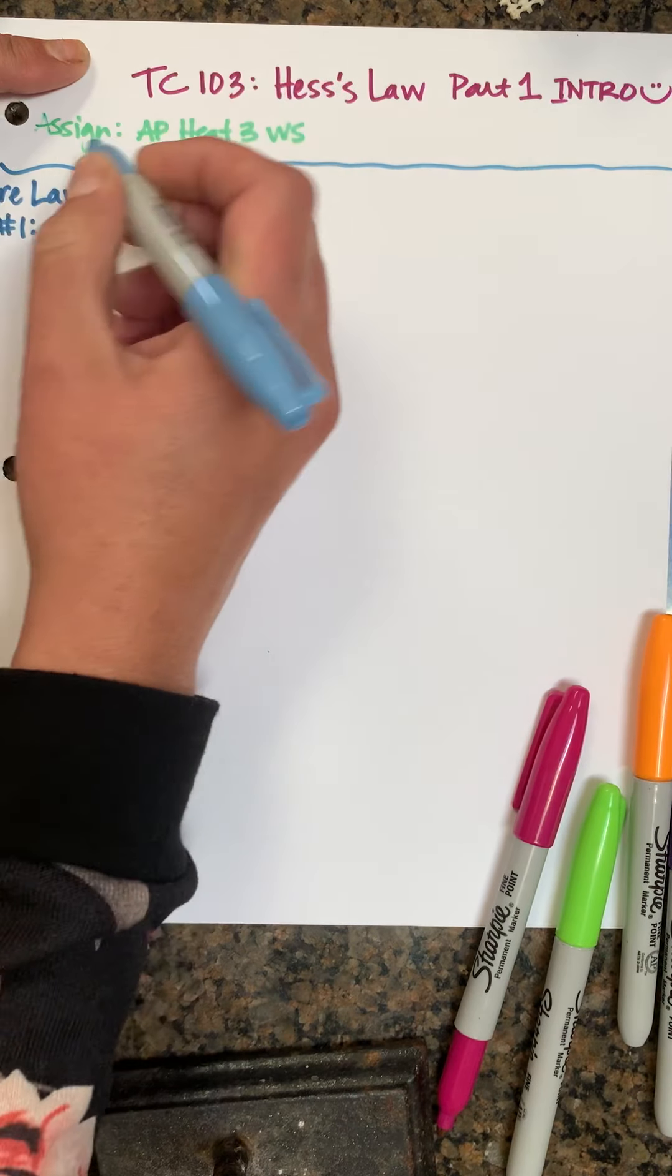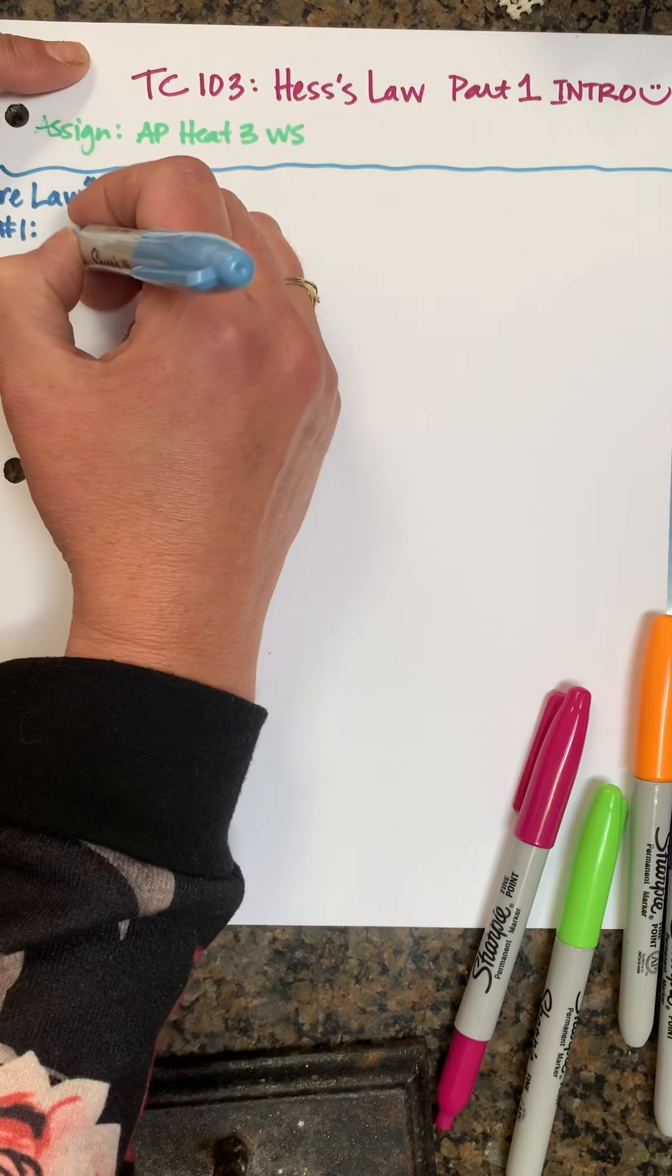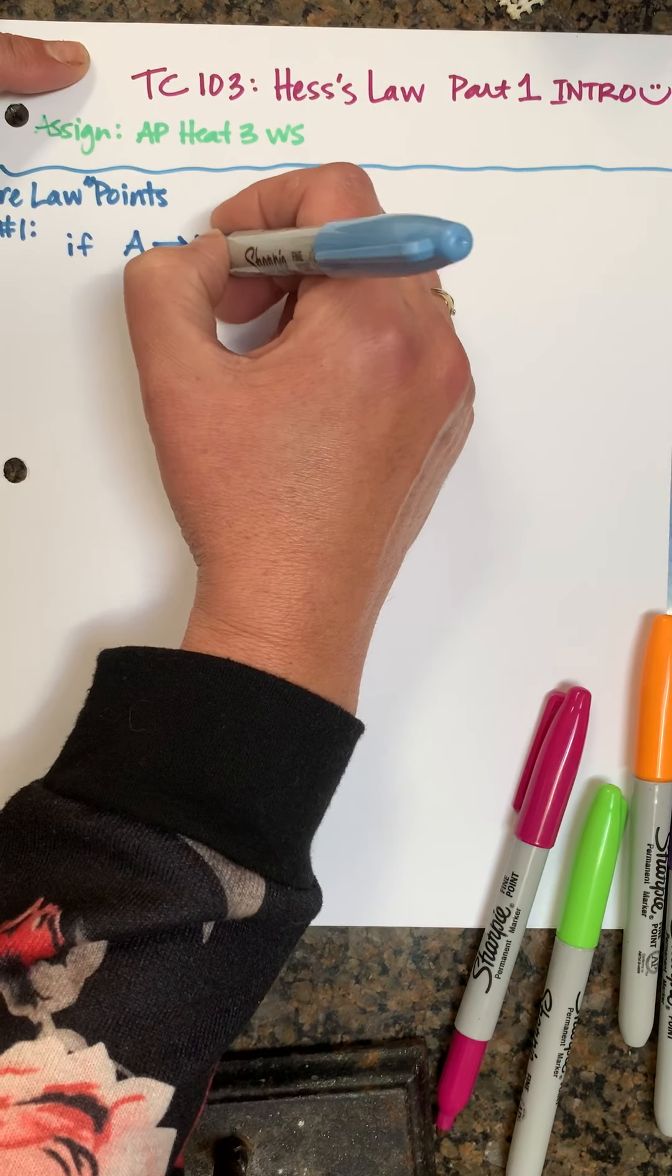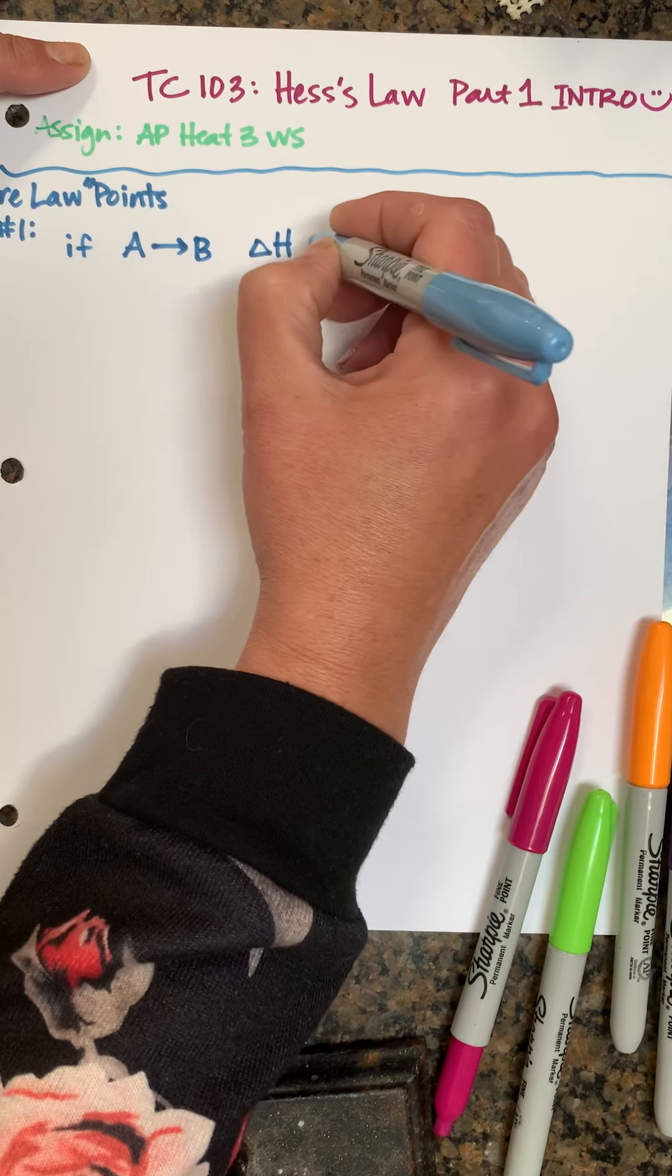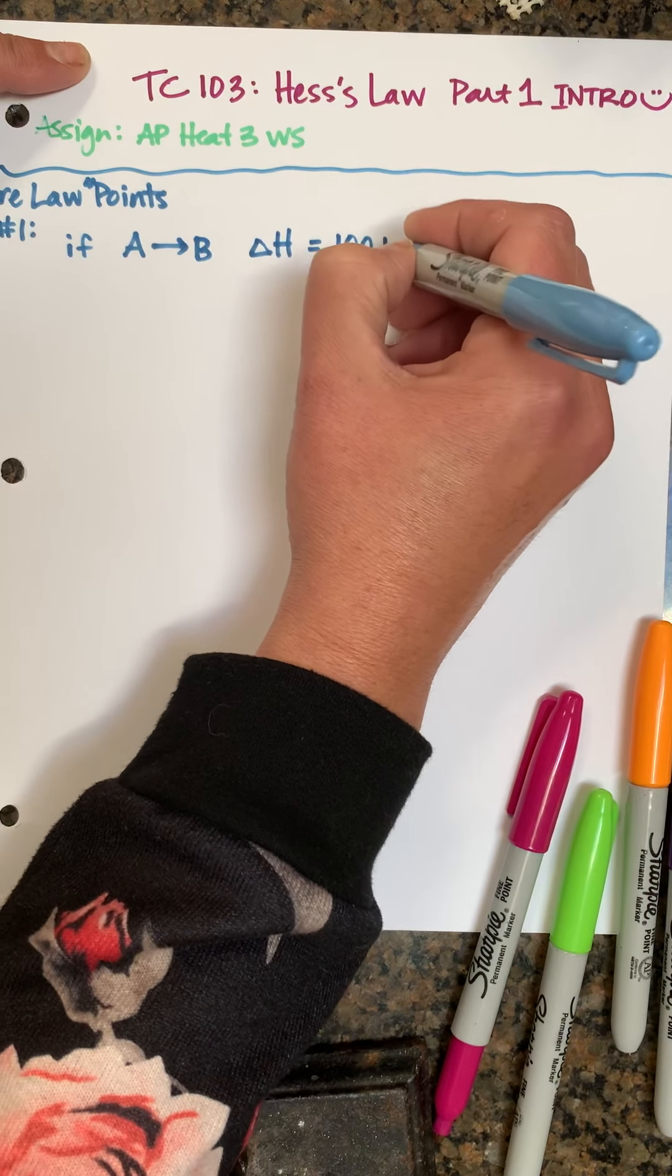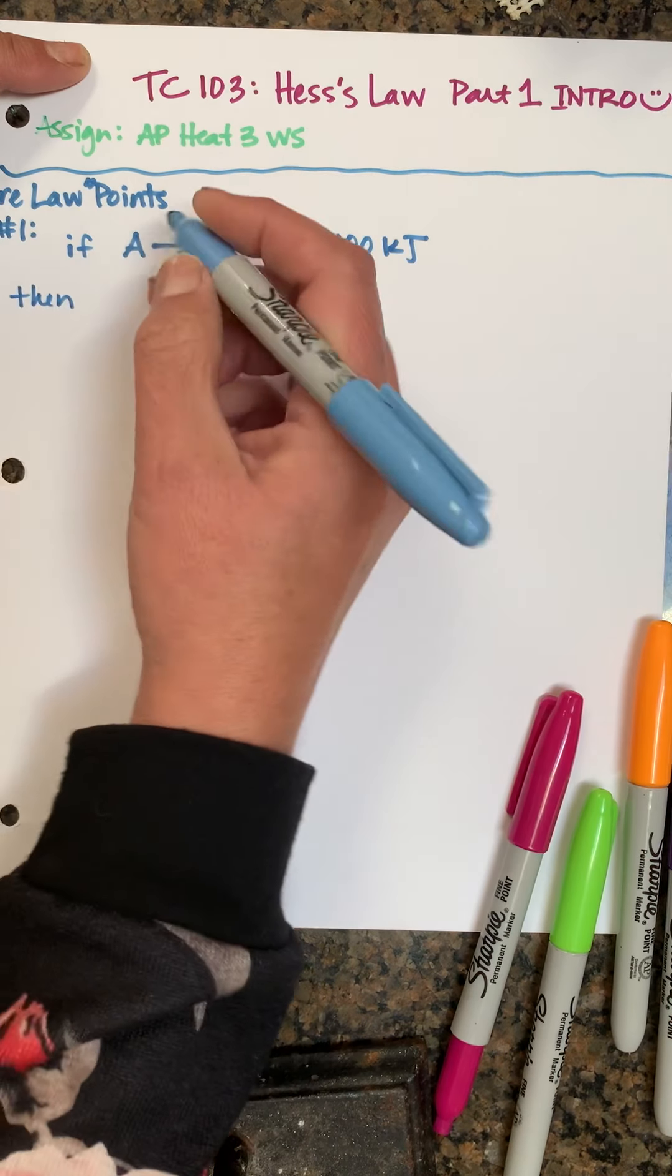Okay, so point number one is this: if we know a reaction like A makes B and we know the heat of reaction is equal to 100 kilojoules, then we can also say a couple other things.